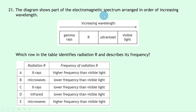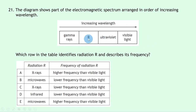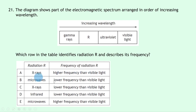Question 21: the EM spectrum shows gamma rays, R, ultraviolet and visible light in order of increasing wavelength. Using the order radio/TV, microwaves, infrared, visible, ultraviolet, X-rays, gamma rays, the missing radiation R sits between ultraviolet and gamma rays — so R is X-rays. Since frequency increases as wavelength decreases, X-rays have higher frequency than visible light — answer A.